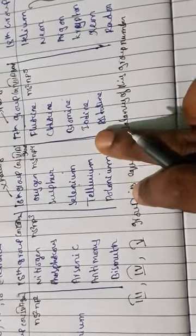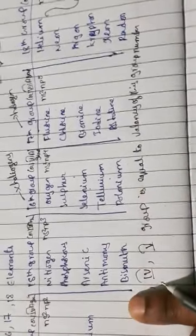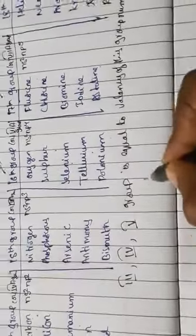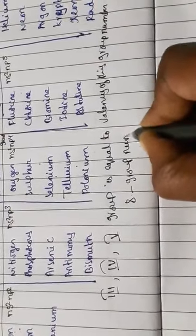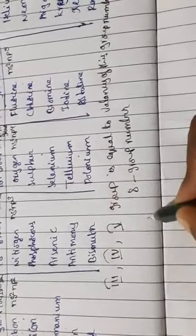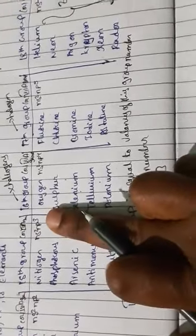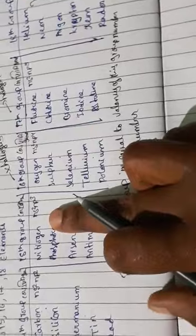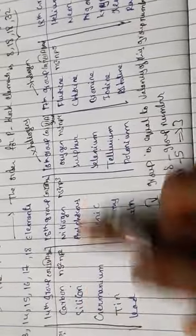The general configurations ns² np³ and ns² np² show that phosphorus can also exhibit a +3 oxidation state. You can find the valency using 8 minus the group number — for phosphorus in group 15, that is 8 minus 5 equals 3, so it can exhibit +3 as well as +5 oxidation state.